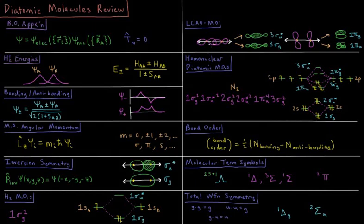we can have the head-on overlap of pz orbitals, giving sigma g and sigma u star orbitals, or the side-on overlap of px and py, giving us one pi u bonding and one pi g star antibonding orbitals.